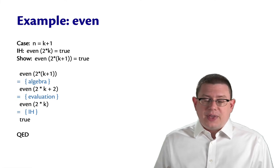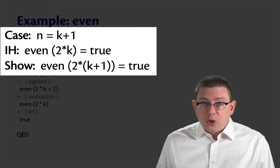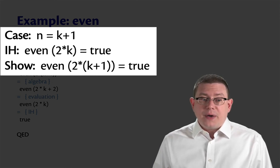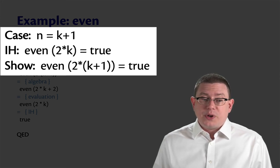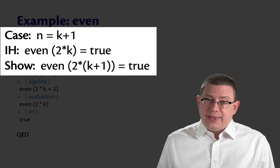What about the inductive case? My natural number N, I'm going to express as a smaller natural number K plus 1. The inductive hypothesis is the property P instantiated on that smaller number. So I get to assume that even of 2 times K equals true.